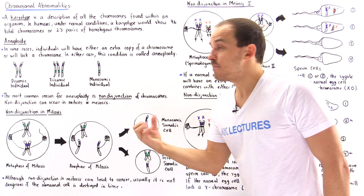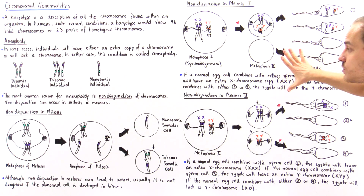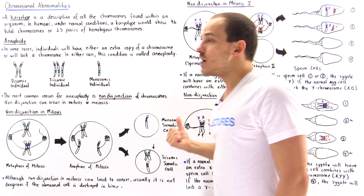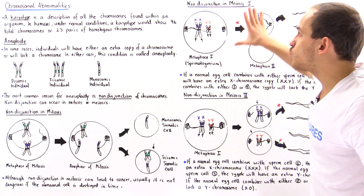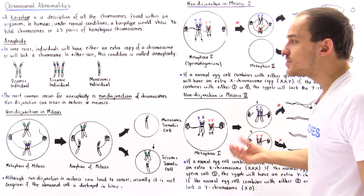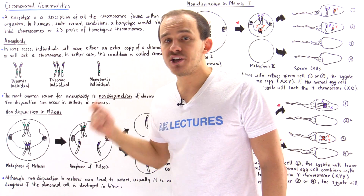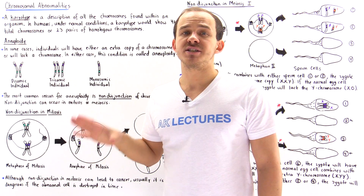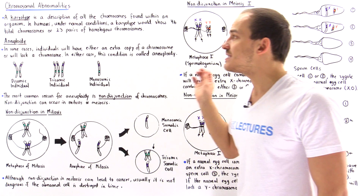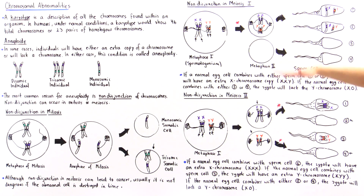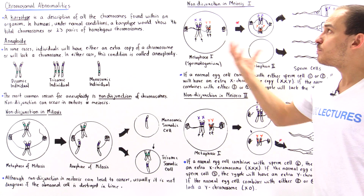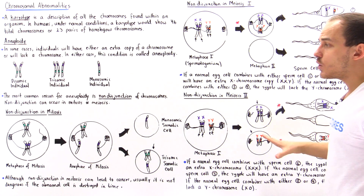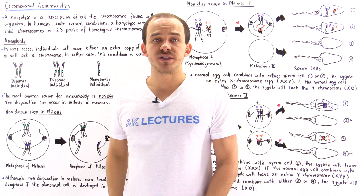And I have to emphasize this: meiosis I or meiosis II can each experience non-disjunction, so there are two places where non-disjunction can occur. If it takes place in meiosis, then all the somatic cells within that individual will contain the aneuploidy condition. That's why it's much more dangerous if non-disjunction takes place in meiosis than if it takes place in mitosis.